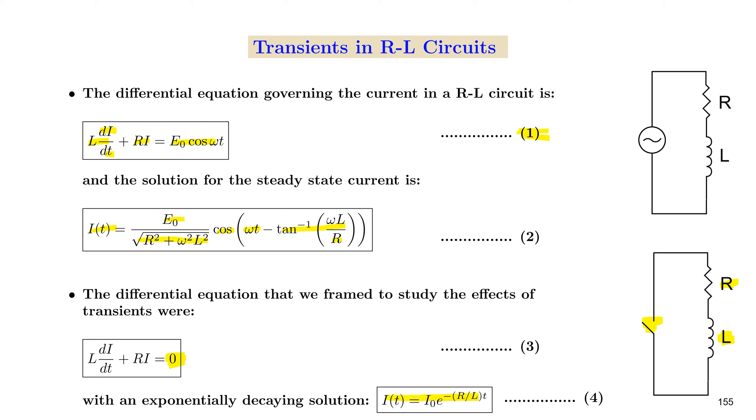We noted that the transient which is determined by some initial conditions has a decaying component, e^(-R/L×t). After some time, t >> L/R, the contribution to the new solution due to the transient component will vanish.